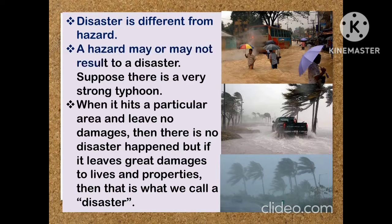Disaster is different from hazard. A hazard may or may not result in a disaster. Suppose there is a very strong typhoon. When it hits a particular area and leaves no damages, then no disaster has happened. But if it leaves great damages to lives and property, then that is what we call a disaster.